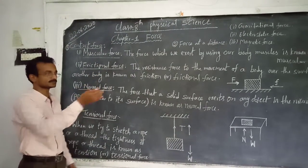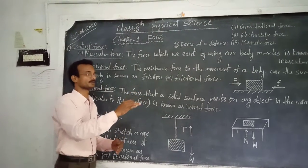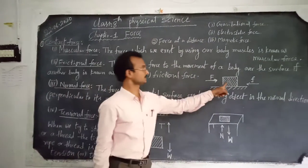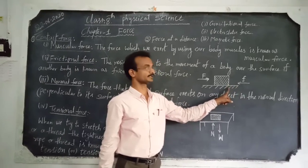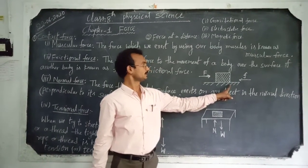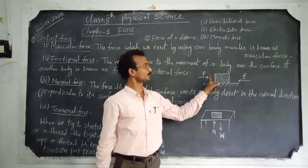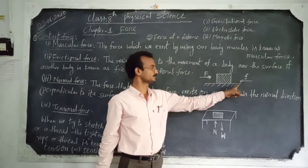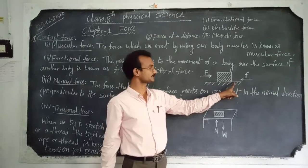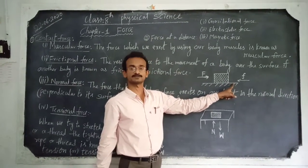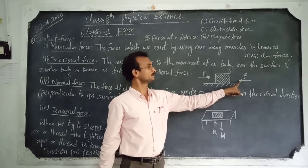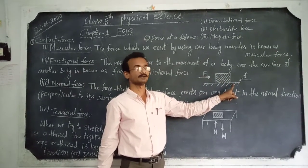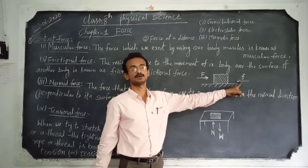The second one is frictional force. Frictional force is an opposing force for the movement of a body over the surface of another body. For example, a body is moving over the surface of the floor. While it is moving, a resistance force arises due to irregularities of the surface. This opposition force to the movement of the body is known as friction or frictional force.